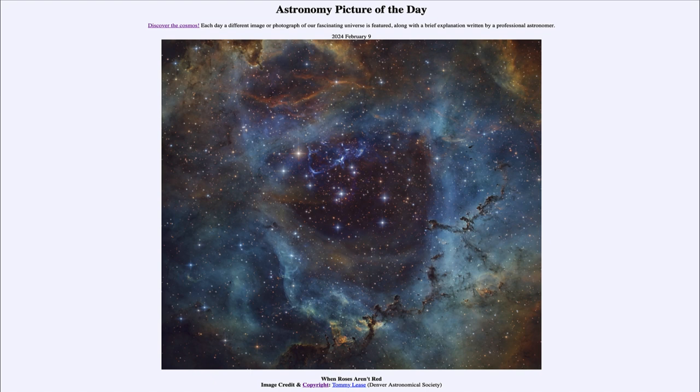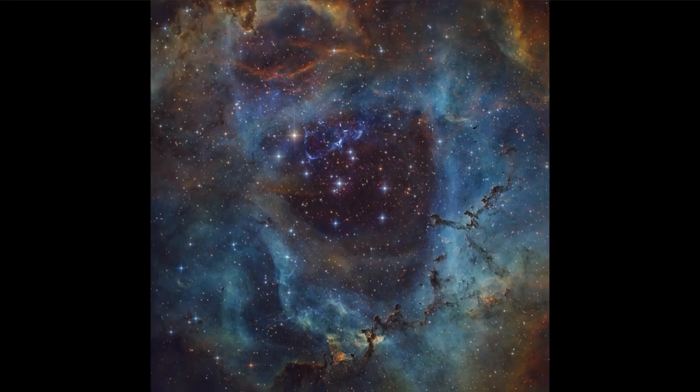So what do we see here? Well, here we see what is known as the Rosette Nebula. And the Rosette Nebula, named for the rose, here does not look very red. So why not?